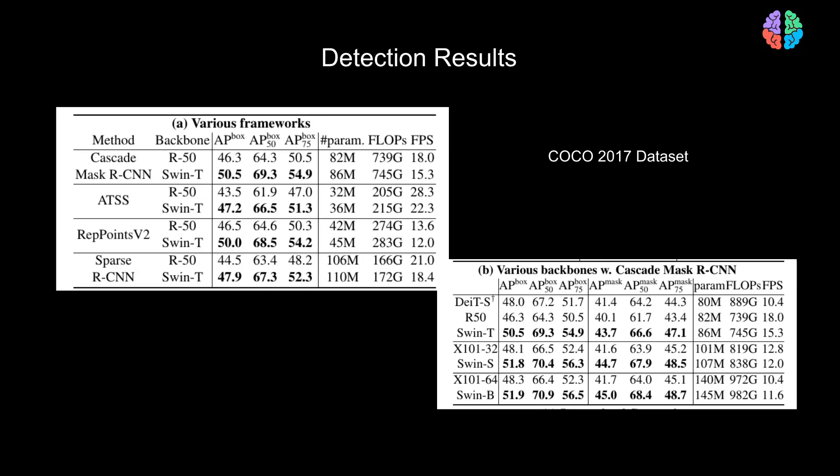For each of the detectors, we can notice that using Swin Transformer as the backbone results in better average precision compared to a standard ResNet backbone. Once again, showing a huge promise towards replacing the ResNet-based backbone when it comes to computer vision tasks.